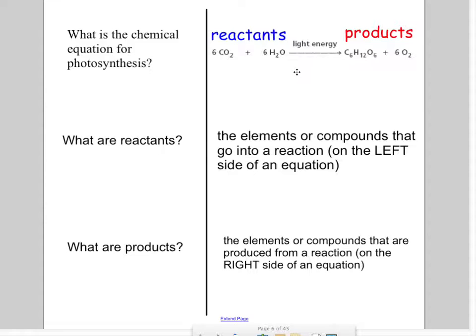Products are the elements or compounds that are produced from a reaction, and those are always located on the right side. Notice that it takes all of these in order to make just one sugar, and it produces some waste which is six oxygen.